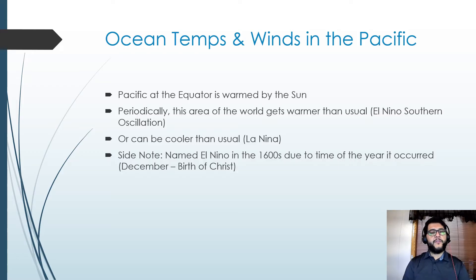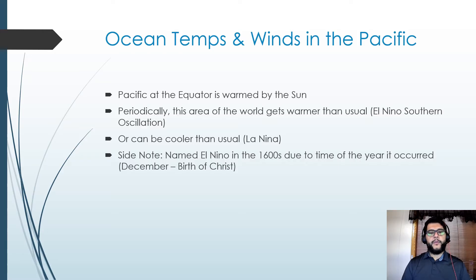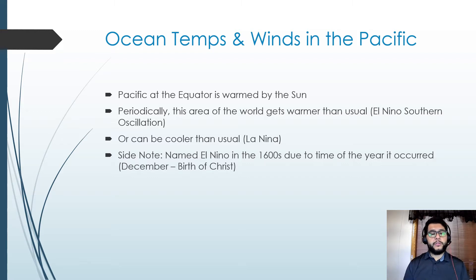The Pacific itself is a very large body of water, and of course it's warmed by the Sun at the equator. Typically you end up with one part of the ocean that gets warmed and another part that gets cooled because of the trade winds as they move.